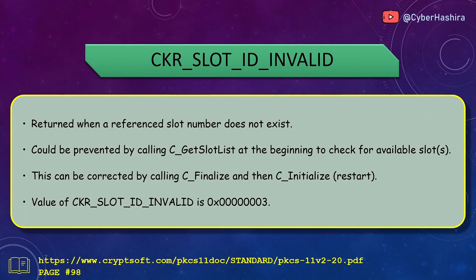CKR_SLOT_ID_INVALID means the slot number an application is trying to use does not exist. One way to prevent this is by calling C_GetSlotList at the start of an application to check for all available slots. If C_GetSlotList returns nothing, no slots were detected. To correct that, your application must call C_Finalize and then C_Initialize. CKR_SLOT_ID_INVALID has a value of 3, found on page 98.